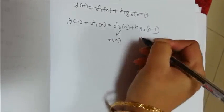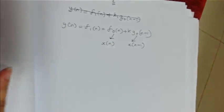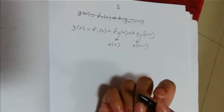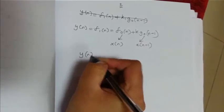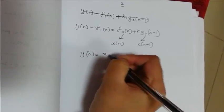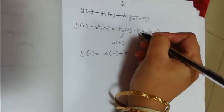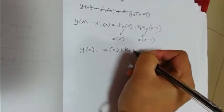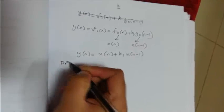This F0 of N is nothing but X of N. G0 of N is nothing but X of N minus 1. So what is the expression in lattice form? Y of N is nothing but X of N plus K1 X of N minus 1. So we need to find K1.